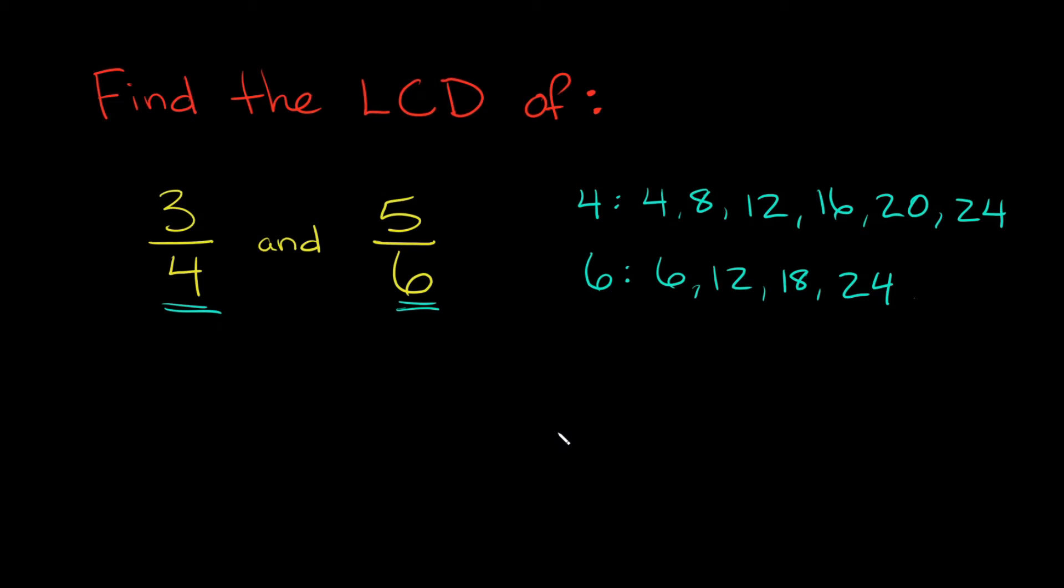Now in order to find the least common denominator, we have to find the least common multiple. So again, that's just the smallest number that they both have in common. So here you'll see that they both have 24 in common, right? But they also have 12 in common. So which one do we want to pick, 12 or 24? Well, again, we want the smallest one. So we would pick 12 in this case. So that means the least common denominator between three-fourths and five-sixths is equal to 12. That'd be your answer.